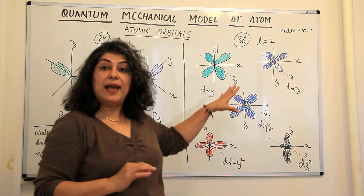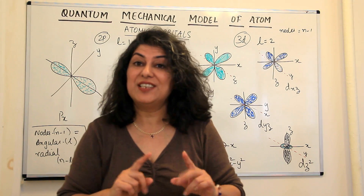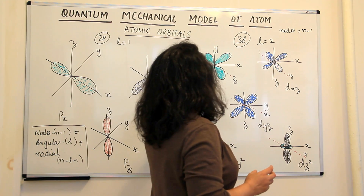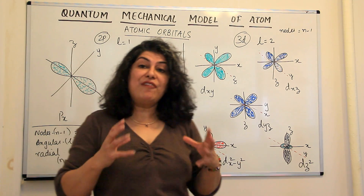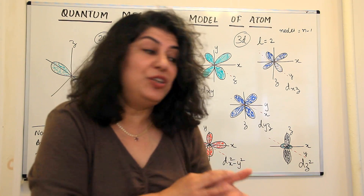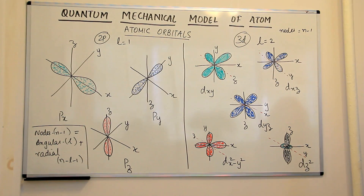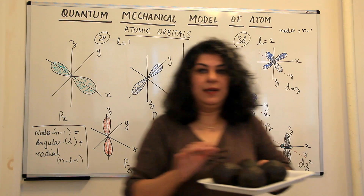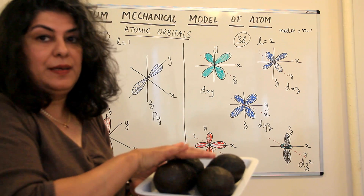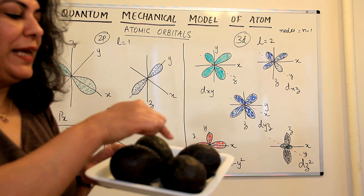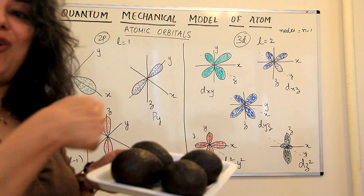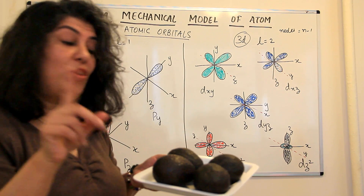The D orbitals, on the other hand, have four lobes instead of two lobes — it's like a flower or clover leaf shape. If they have four lobes, how do they orient themselves around the nucleus? They orient themselves like a clover leaf. They look like two P orbitals along each other, but they are not actually P orbitals. Each D orbital has four lobes, and we know the value of L for d is two.